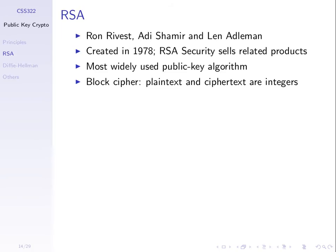RSA was created not long after the first public key algorithm was released by Diffie and Hellman. After the midterm we'll cover another algorithm called Diffie-Hellman. RSA's inventors created a company that sold products using it, including spin-offs that sold certificates for websites. Most certificates used today for HTTPS use RSA, and some people from RSA Security spun off what became VeriSign, a major certificate provider.